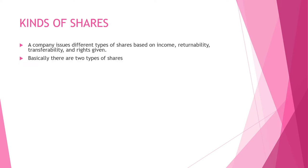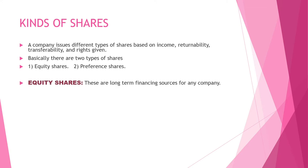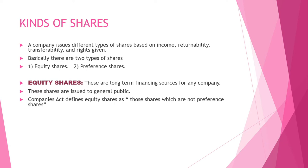Basically, there are two types of shares: equity shares and preference shares. Equity shares are known as the long-term financing for any company. These shares are issued to the general public. The Companies Act defines equity shares as those shares which are not preference shares — that is, shares which do not have any sort of prominence or preference.